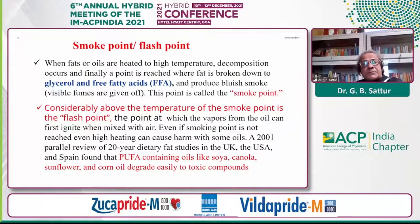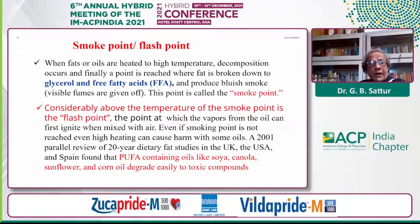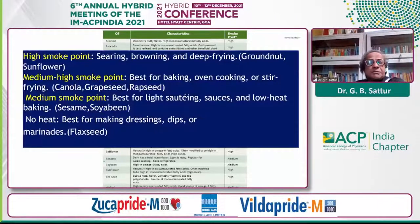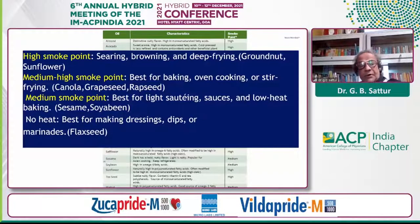We need to know what the smoke point is. Smoke point is where, when you heat oil for cooking, decomposition occurs and fat is broken down to glycerol and free fatty acids, producing a bluish smoke. Beyond smoke point is the flash point, where you start getting fire from the oil when mixed with air. High smoke point oils are used for deep frying — for example groundnut oil and sunflower oil. Medium to high smoke point is good for oven cooking or stir frying — examples are canola and rapeseed or grapeseed oil. Medium smoke point is for sauces or low heat baking, like sesame and soybean. When you don't want any heat, use flaxseed.